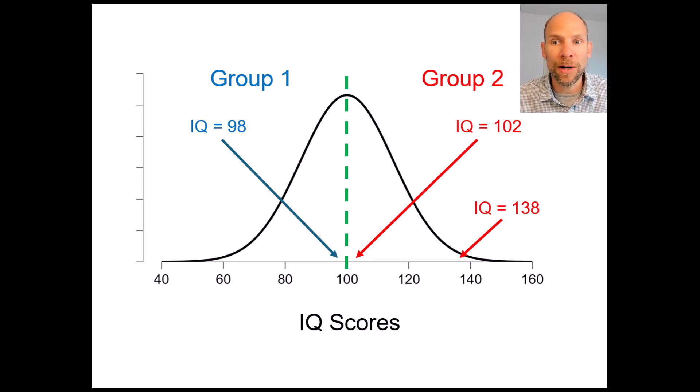and so these people would still end up in the same group in group two even though they are much more different than our people with an IQ score of 102 versus an IQ score of 98